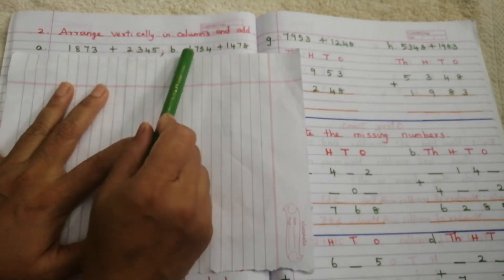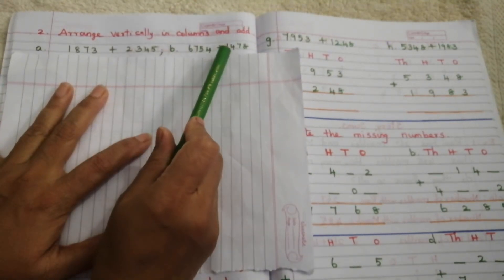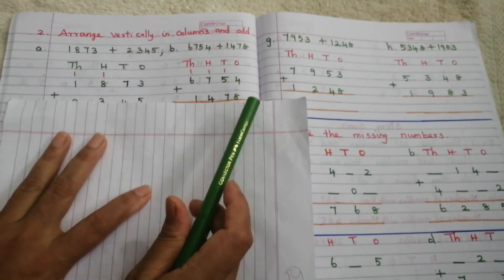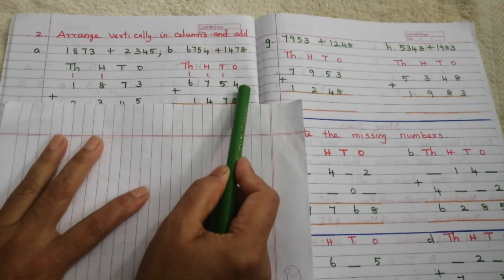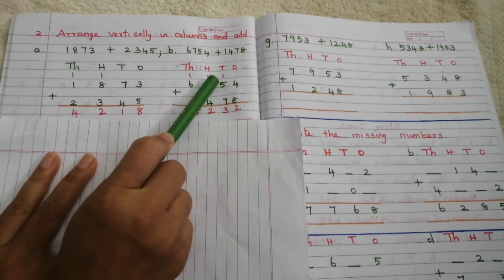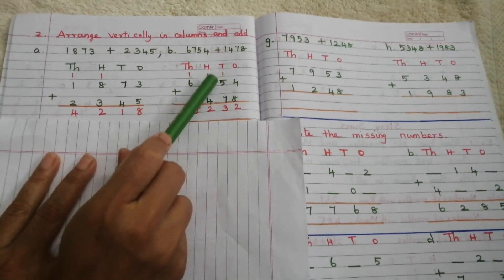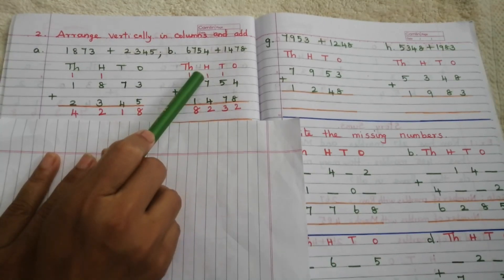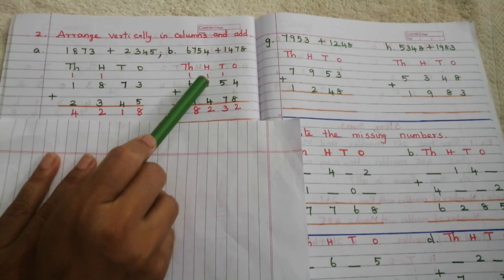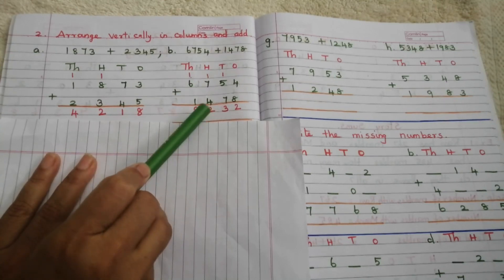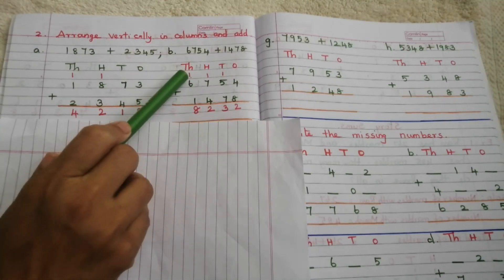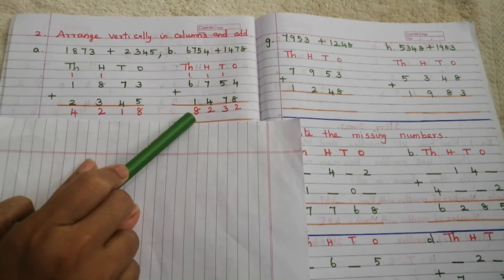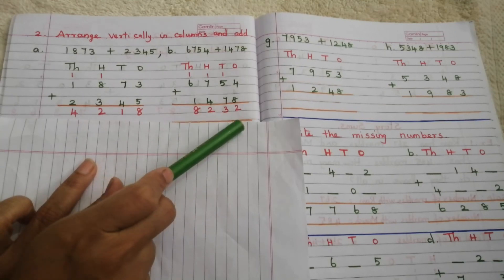Problem B: 6,754 plus 1,478. Adding 8 plus 4 is 12 — write 2 here and carry 1. Then 5 plus 1 is 6, 6 plus 7 is 13 — write 3 here and carry 1. Then 7 plus 1 is 8, 8 plus 4 is 12 — write 2 here and carry 1. Finally, 6 plus 1 is 7, 7 plus 1 is 8. Answer: 8,232.